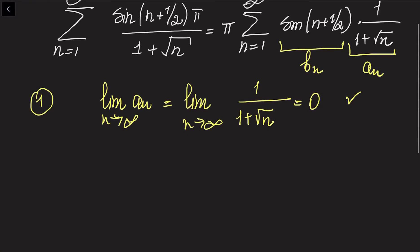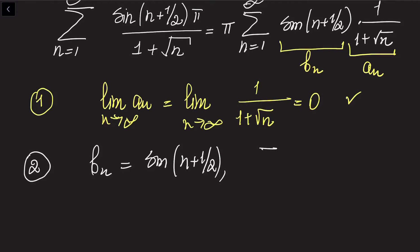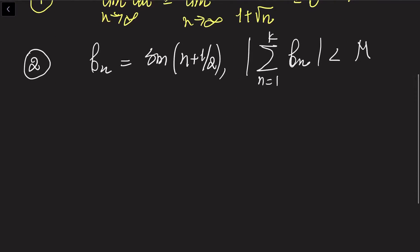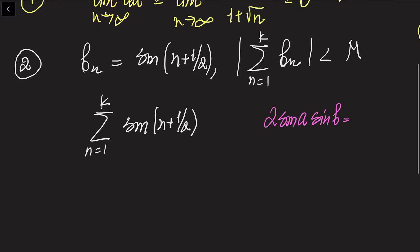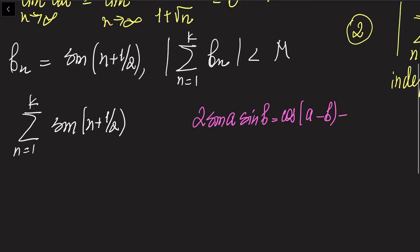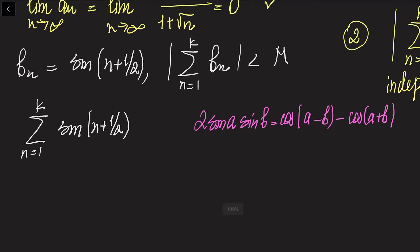We just need to check whether bN is bounded. bN is given as sine of (n + 1/2). What we have to do is show that the sum of bN in absolute value, when n goes from 1 to k, is less than some finite number M. So let us write down the sum of sine of (n + 1/2). Here we are going to use a trigonometric formula: 2·sin(a)·sin(b) = cos(a − b) − cos(a + b).